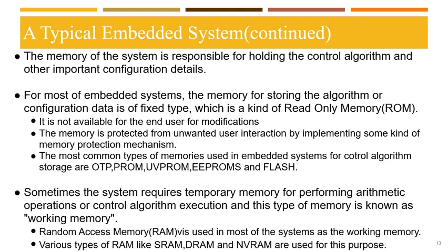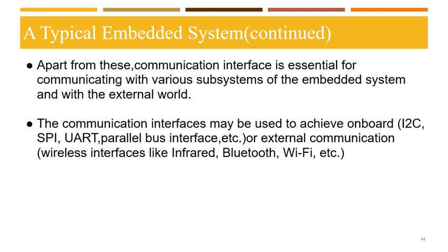In order to establish communication with various subsystems and with the external world, a communication interface is essential. The communication interface may be used to achieve onboard or external communication. Onboard communication uses I2C, SPI, UART, and parallel bus interfaces. For external communication, wireless interfaces like infrared, Bluetooth, and Wi-Fi are used.